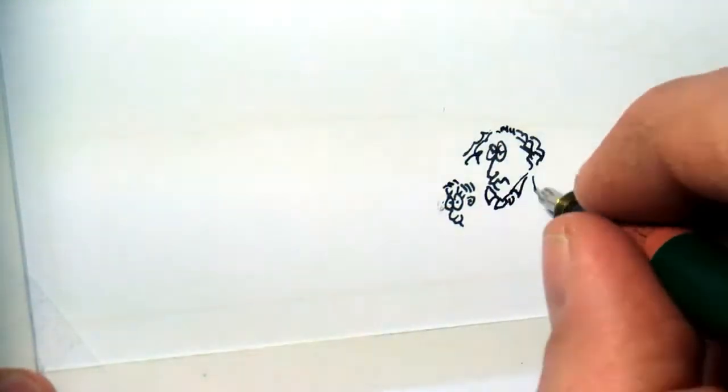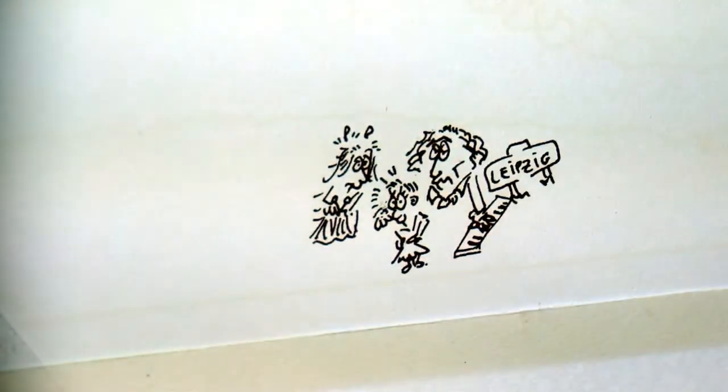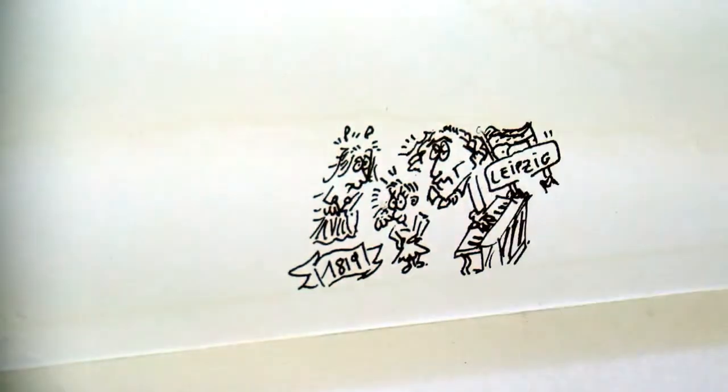Born in Leipzig, Germany during the 19th century, Clara is the daughter of Friedrich Wieck, a famous piano teacher.